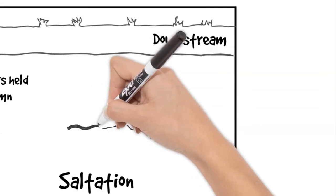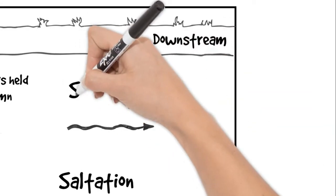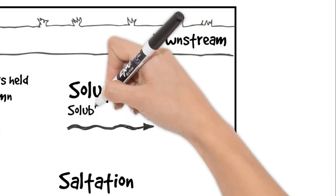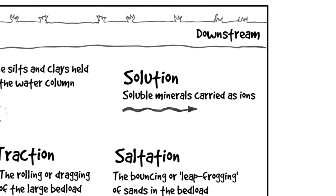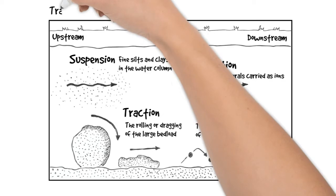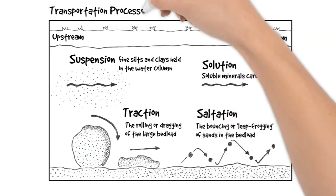And then finally we have our solution. This is the dissolved ions like calcium and bicarbonate ions. You can't see these because they are just the size of atoms and small molecules.